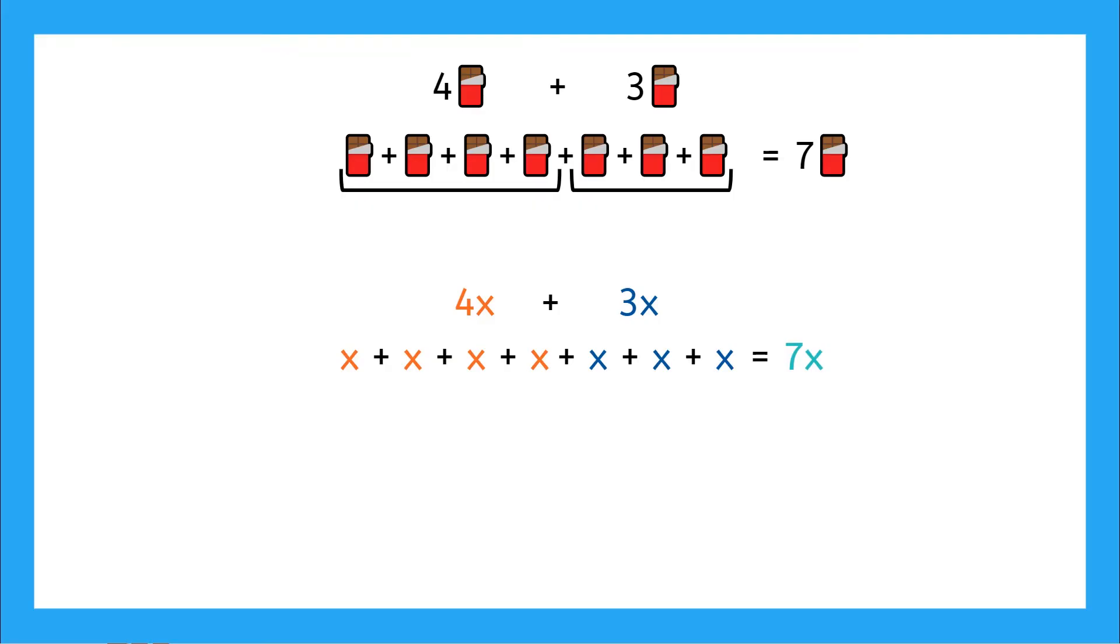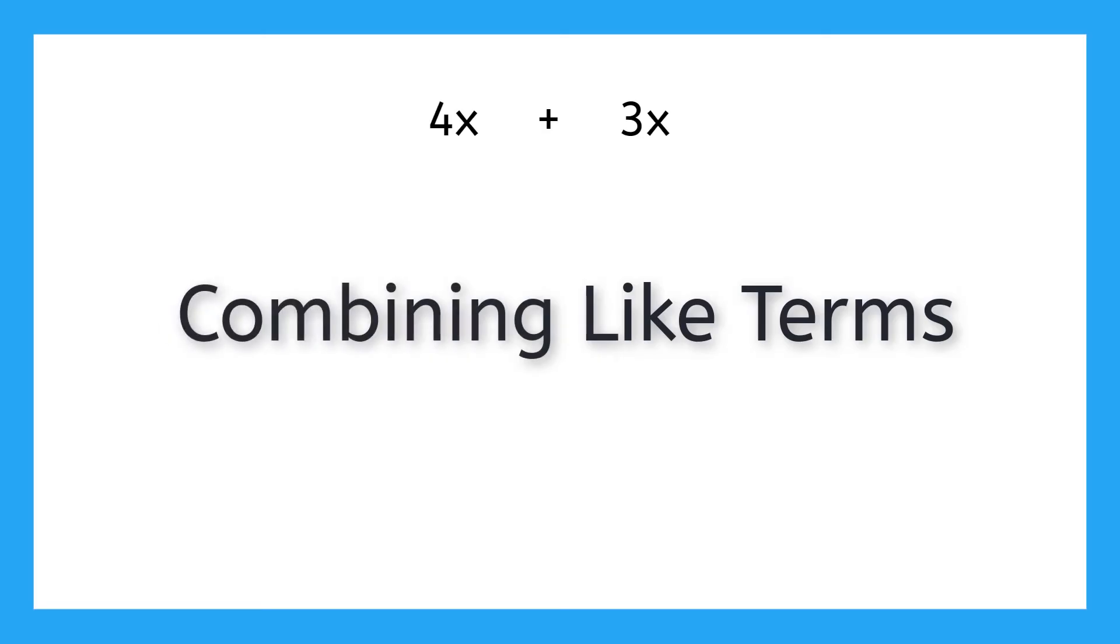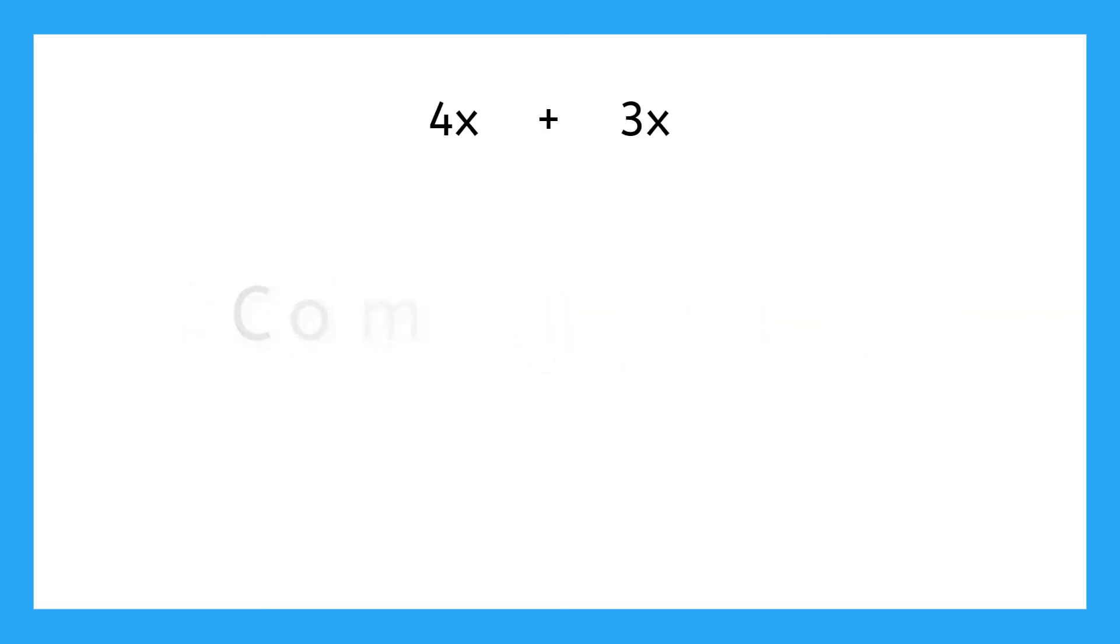So what are we really doing here? When we have an expression like 4x plus 3x, we can simplify it by a process called combining like terms. So what is a like term? Well, first of all, do you remember what a term is in algebra?